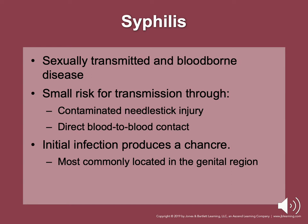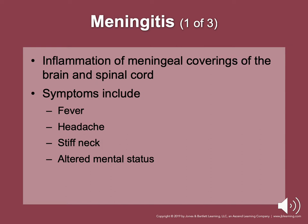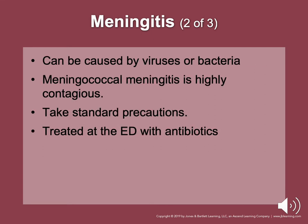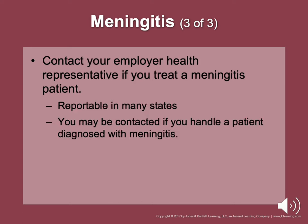Meningitis is the inflammation of the meningeal coverings of the brain and spinal cord. It can be caused by viruses or bacteria, most of which are not contagious. However, one form of meningitis is highly contagious — laboratory tests are needed to sort out the different forms. Take standard precautions and wear a mask to prevent the patient's secretions from entering your nose and mouth. It is treated at the emergency department with antibiotics. After treating a patient with meningitis, contact your employer's occupational health representative. Meningitis is a reportable disease, and you may be contacted if one of your patients is later diagnosed.